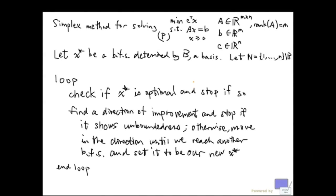We are going to put together a working version of the simplex method. The problem we are trying to solve is minimize c transpose x subject to Ax equal to b, x greater than or equal to 0, and a, b, c are problem data. We assume that the rank of A is m, so A has full row rank.